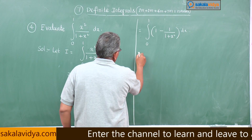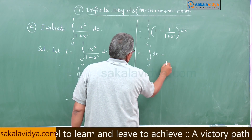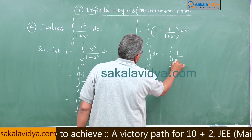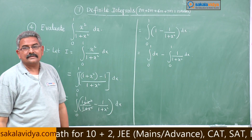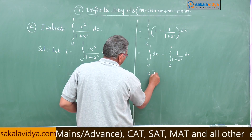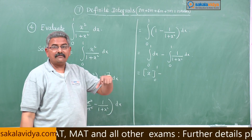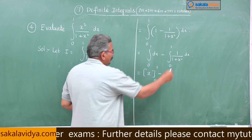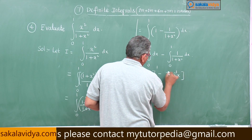Now we can write this as integral 0 to 1 dx minus integral 0 to 1 of 1 by (1 plus x squared) dx. The integral of dx is x. What is the integral of 1 by (1 plus x squared)? That is the derivative of tan inverse x. So the integral becomes tan inverse x, with limits 0 to 1.